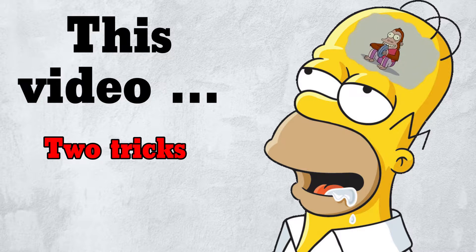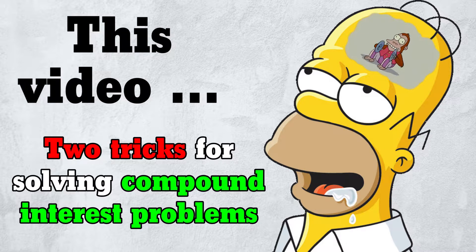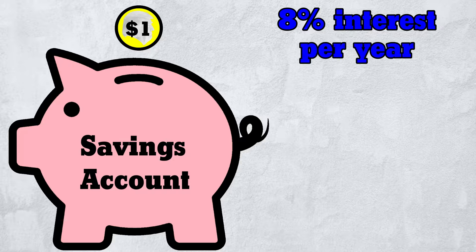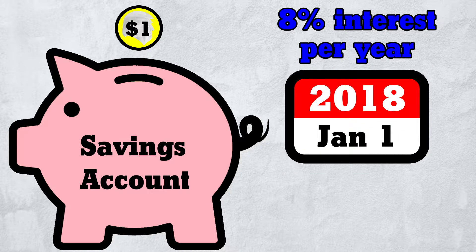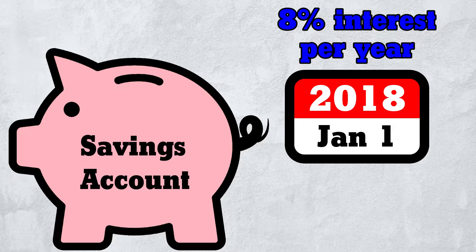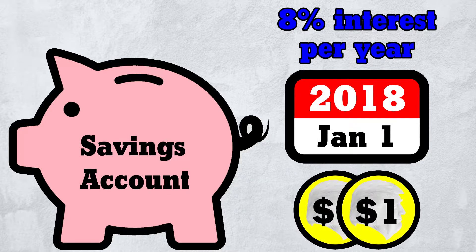In this video we'll learn two tricks for solving compound interest problems in our heads. Trick one is the rule of 72. A savings account pays 8% interest per year. At the start of 2018 we deposit $1. When will this initial dollar grow to $2?